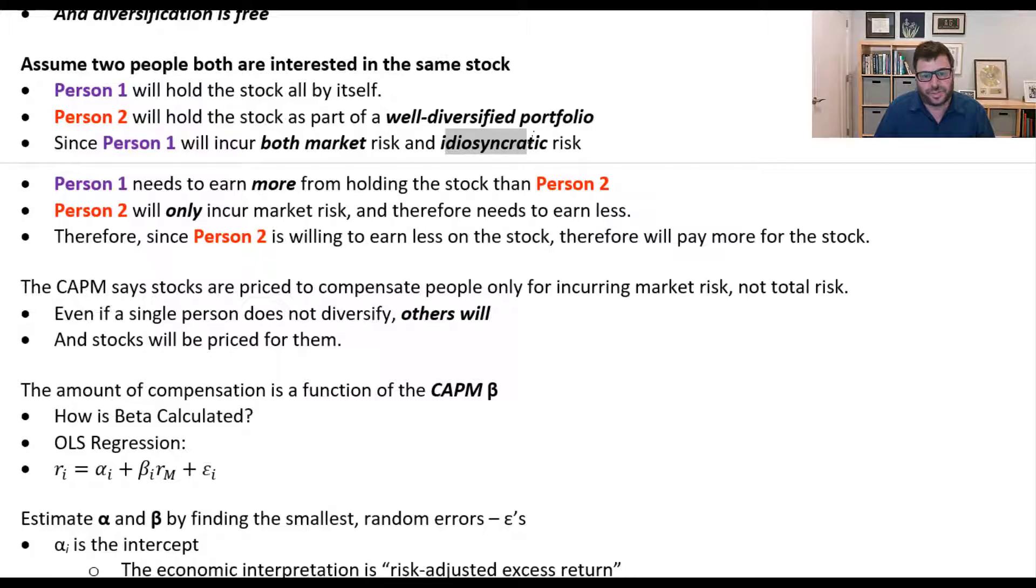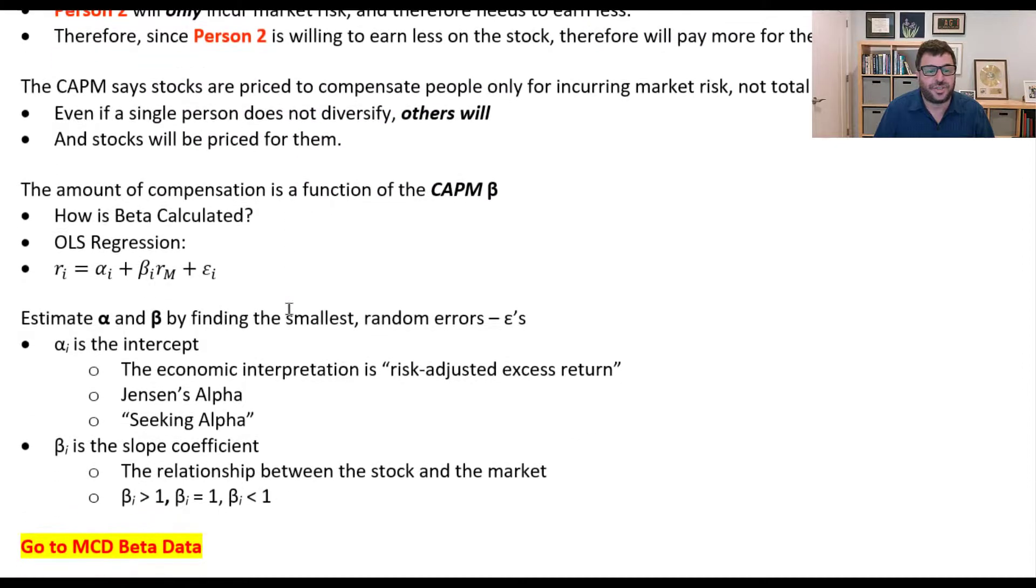Therefore, since diversification eliminates idiosyncratic risk, you are not compensated for the idiosyncratic component. And so therefore, the CAPM says that stocks are priced to compensate people only for incurring market risk, not total risk. So even if a single person does not diversify, others will, and so the stocks will be priced for them.